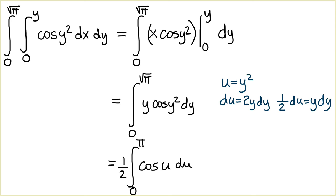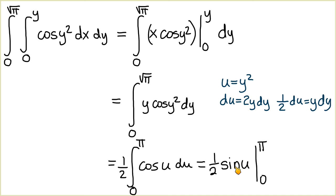An antiderivative of cosine of u is sine of u, so we have ½ sine of u. Replacing u with π we have ½ sine of π, which is 0, and replacing u with 0 we have ½ sine of 0, which equals 0. So this integral equals 0.